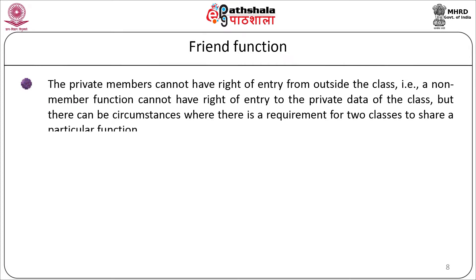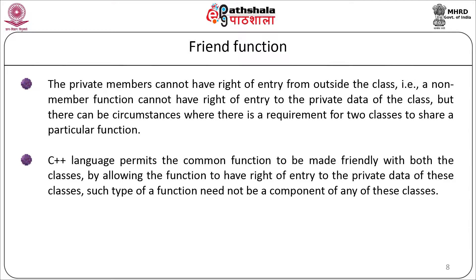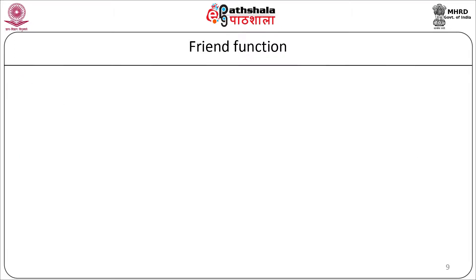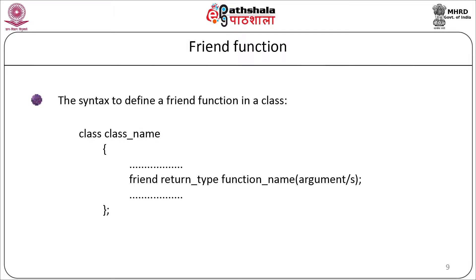C++ permits a common function to be made friendly with both classes or more than one class by allowing the function to have access to the private data of the class. Such a function need not be a member of that particular class. To make an outside function a friend of a class, the function must be declared as a friend inside the class. The syntax is: inside the class definition, declare `friend return_type function_name(arguments);`.